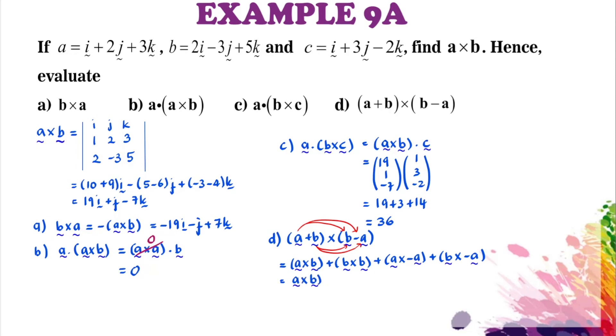And we know that by property number one, B cross B and A cross A will end up equal to zero.